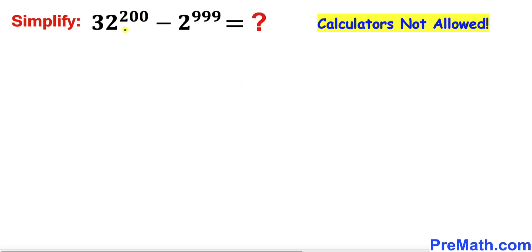Welcome to PreMath. In this video we are going to simplify this given expression: 32 to the power 200 minus 2 to the power 999.